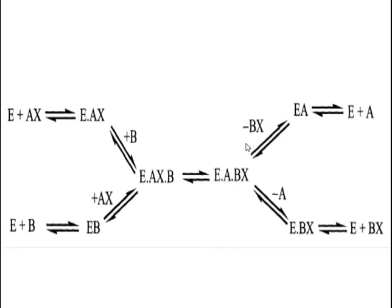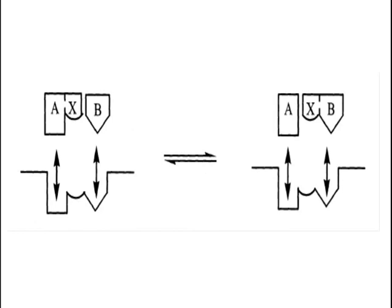From this product, BX will leave which gives EA as a product, and finally E will separate from A, or EA will leave from this compound which gives complex E-BX which is responsible for the formation of product BX and free enzyme E. There will be two binding sites on the enzyme, one for A or AX and one for B or BX.